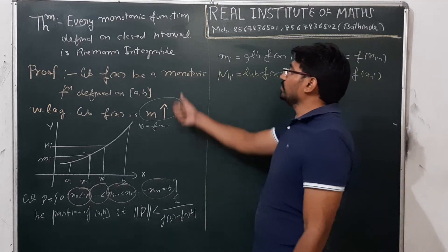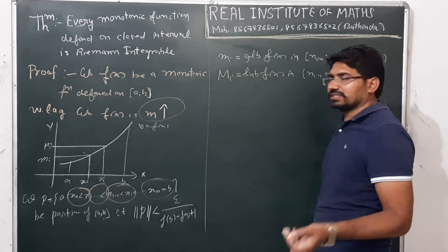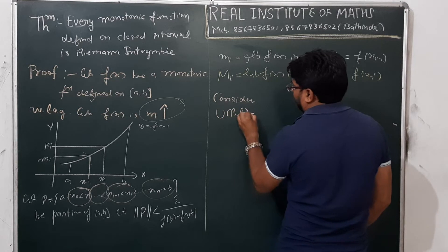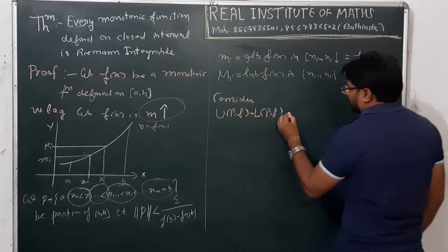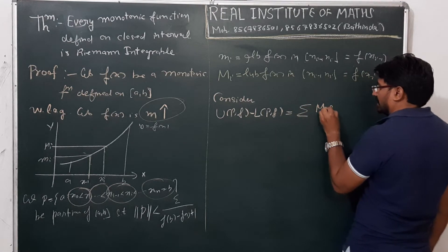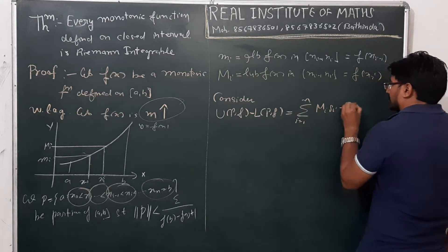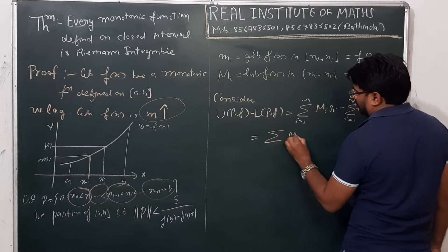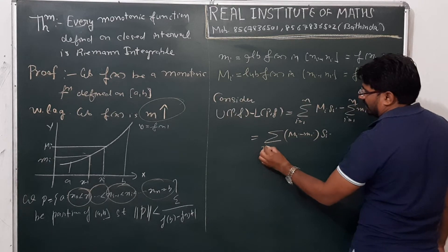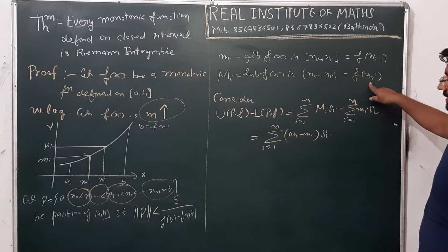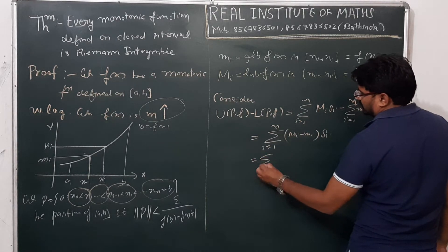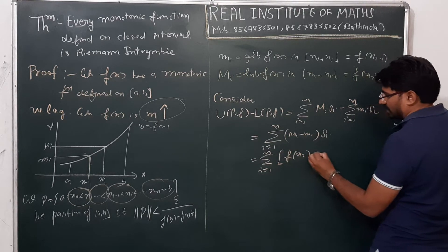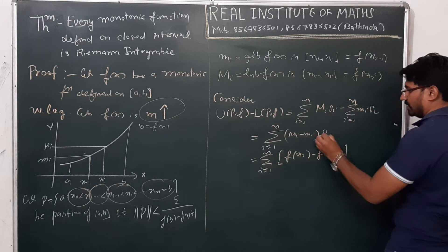We have to prove that the function is Riemann integrable, so consider U(P,f) minus L(P,f). This equals the summation of capital M_i times delta_i for i running from 1 to n, minus the summation of small m_i times delta_i for i running from 1 to n, which can be written as summation of (M_i minus m_i) times delta_i for i from 1 to n.